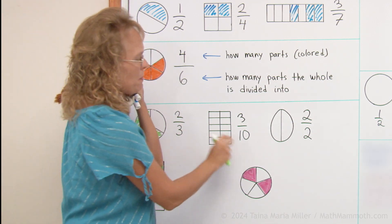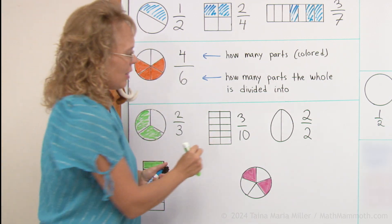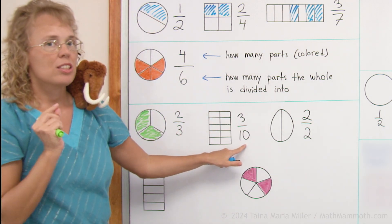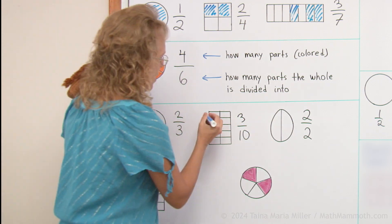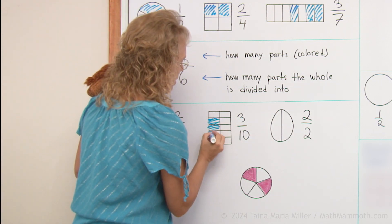What fraction is this one? This shape is divided into 10 parts. Each part is a tenth. We have three tenths. So I color three.